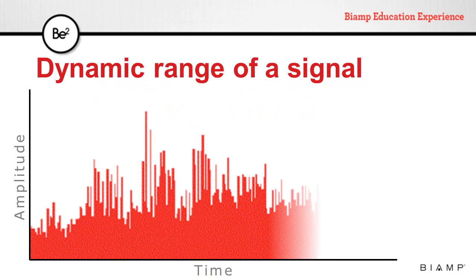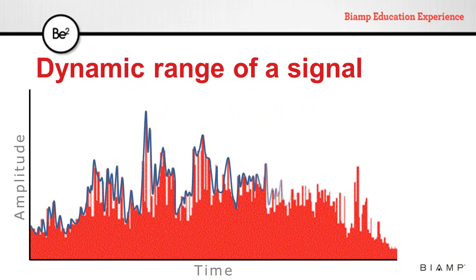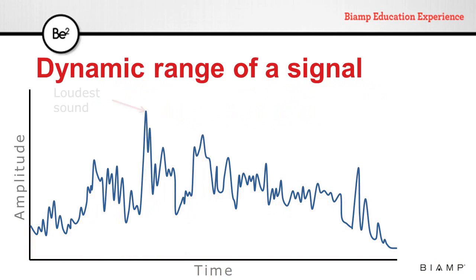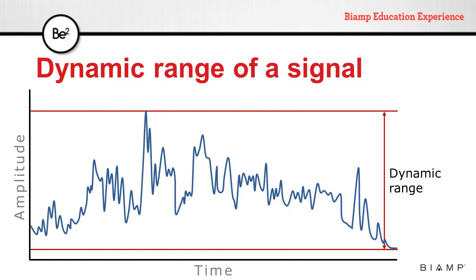If we capture a signal over time and draw a line over the peaks and valleys of that signal, we can find the loudest sound and the softest sound during that period. The difference between those two values is the dynamic range of a signal.